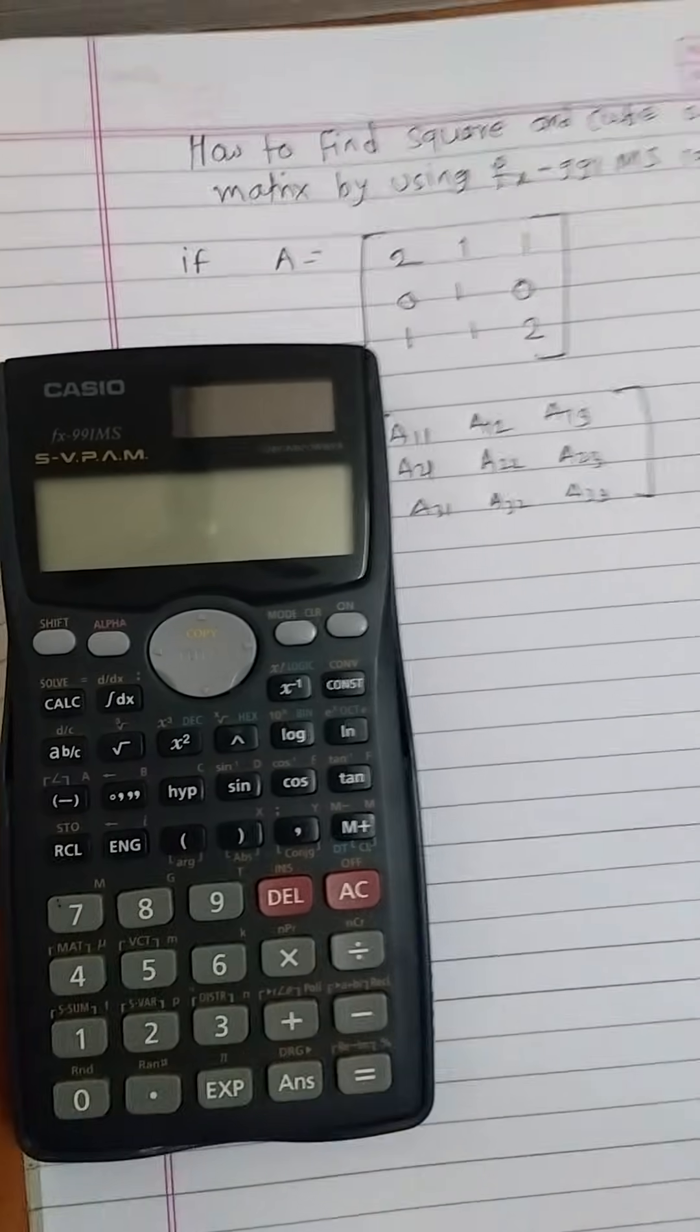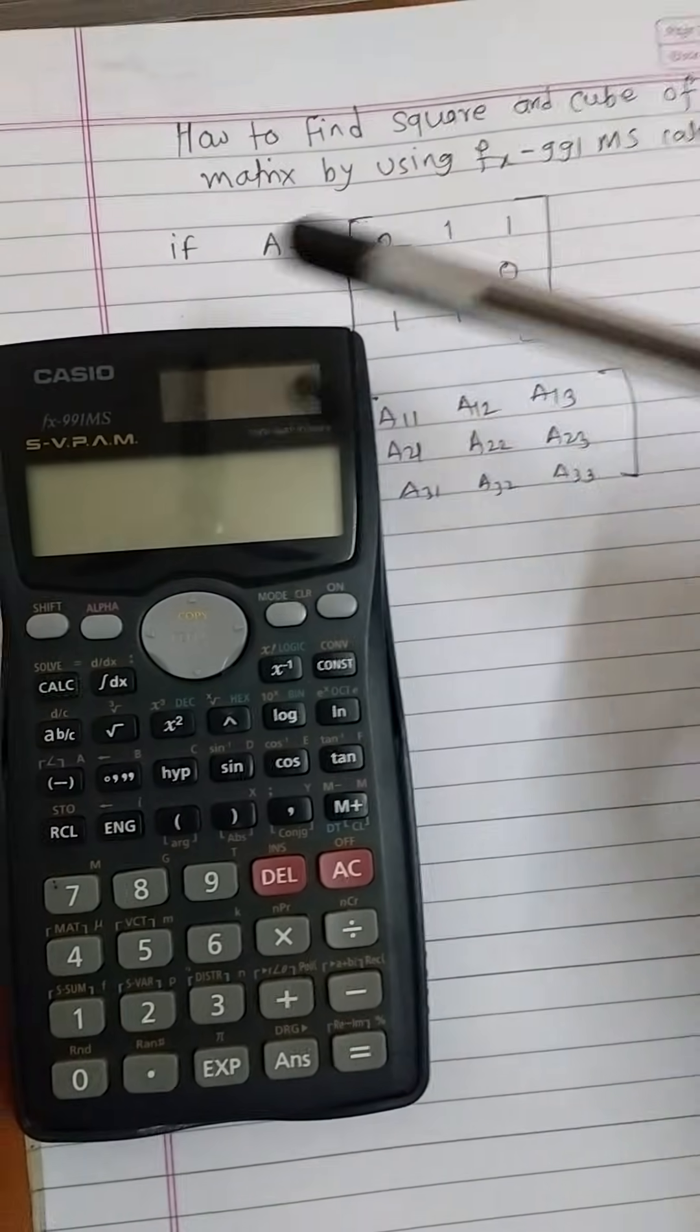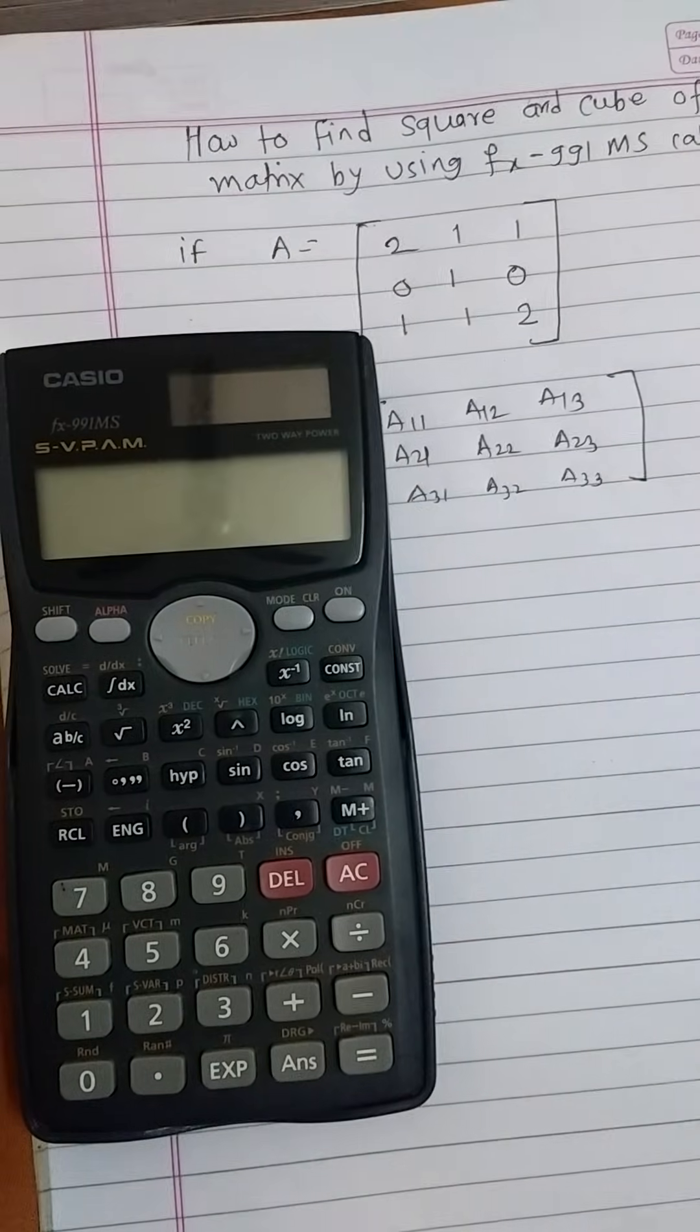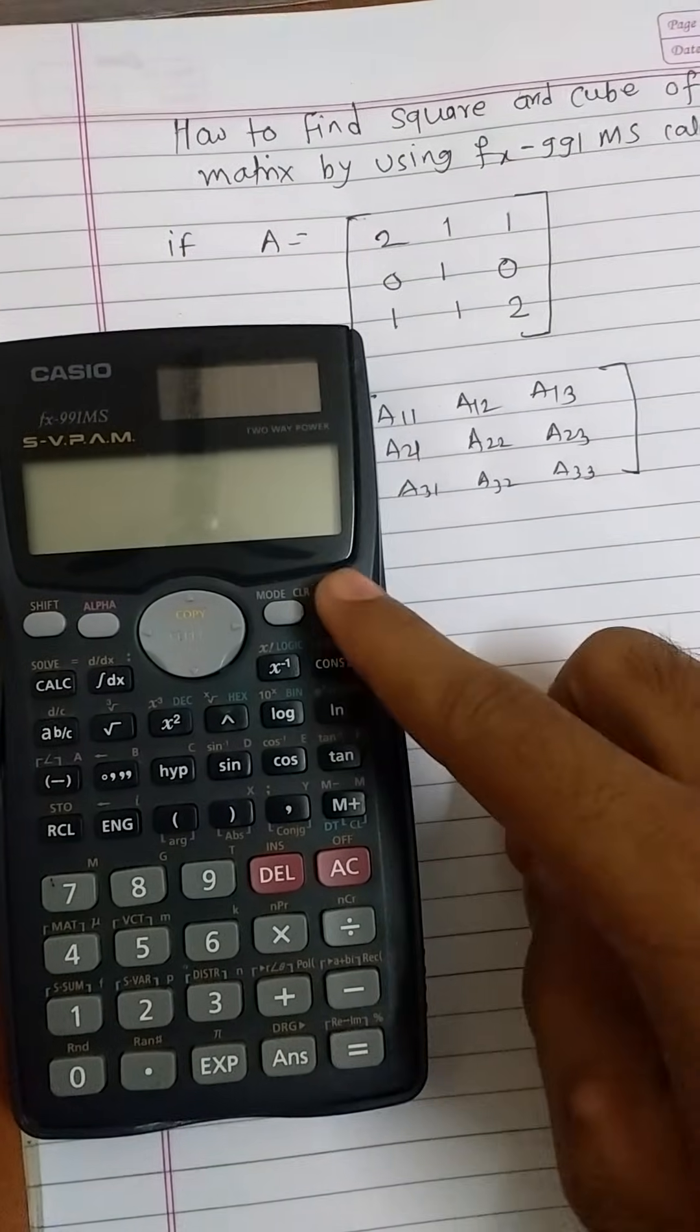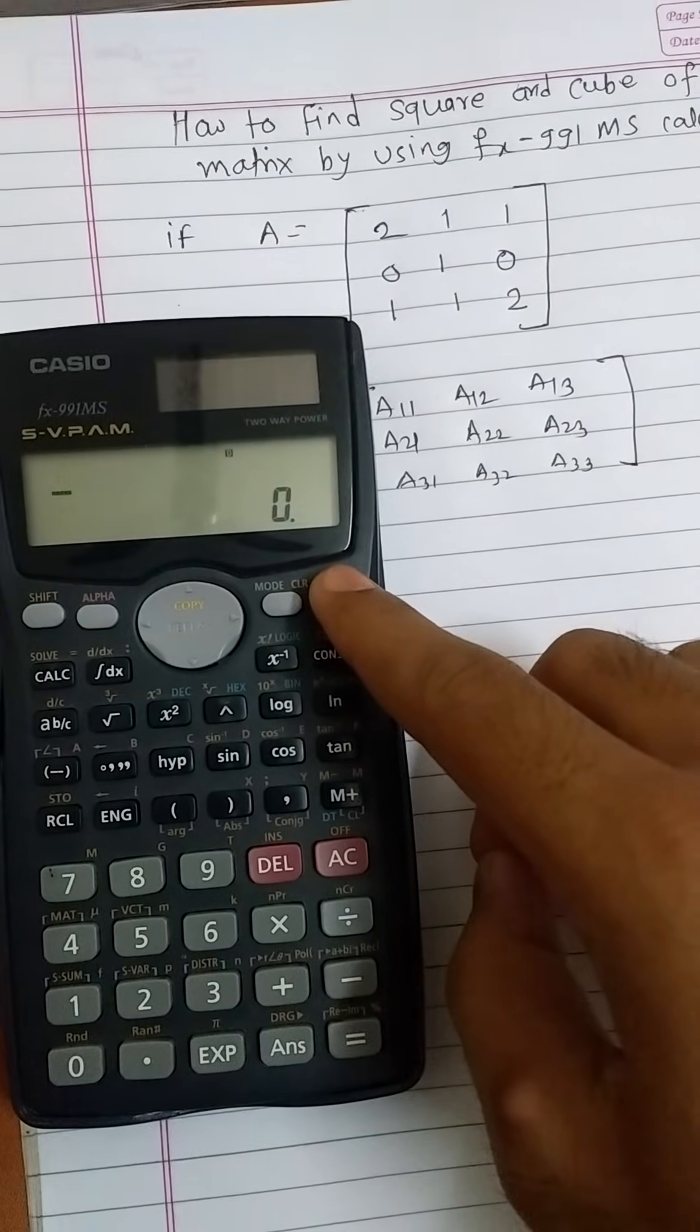Hi, in this video I am going to explain how to find the square or the cube of the given matrix by using FX-991MS calculator. For this purpose, first turn on your calculator by pressing the on button, then we are interested in matrix mode. To choose matrix mode, press the mode button three times.